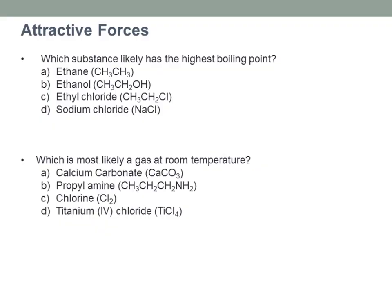Let's put this in action with a couple of examples. You're being asked: which substance likely has the highest boiling point — ethane, ethanol, ethyl chloride, or sodium chloride? We want to first reinterpret what this question is asking. If it has the highest boiling point, it needs the highest temperatures for particles to separate enough to become gases. So whatever has the strongest attractive force must have the highest boiling point — this question is really asking which compound has the strongest attractive force.